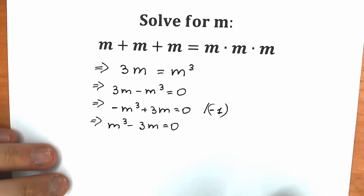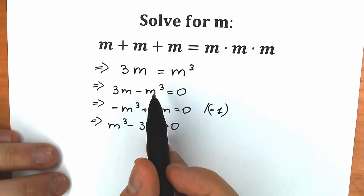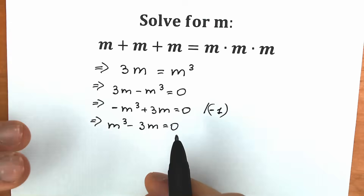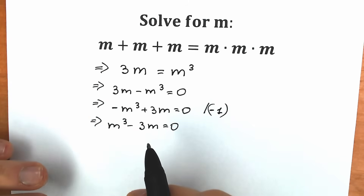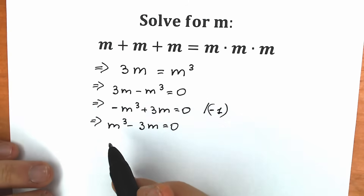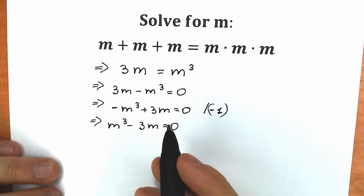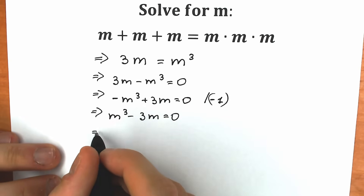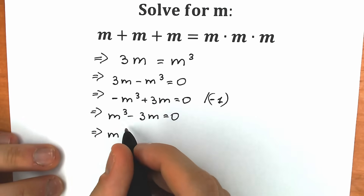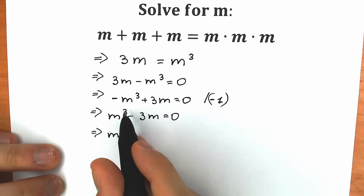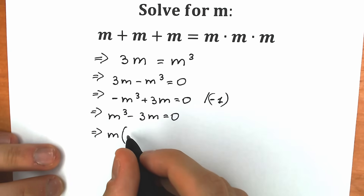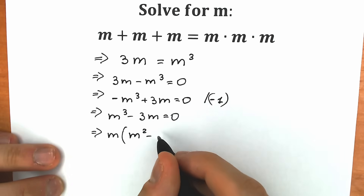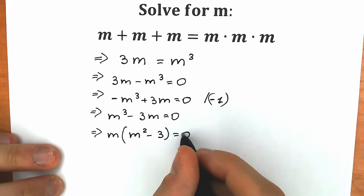We just rearranged in two steps. So we have a basic cubic equation. How can we solve it? Let's factor out m. As a result, we have m times, inside parentheses, m squared minus 3, equal to zero.